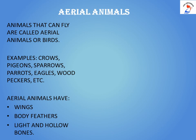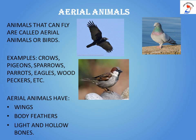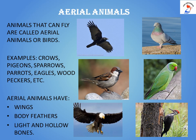The second type of animals we are going to learn about is aerial animals. Animals that can fly are called aerial animals, or in short, birds. Examples are crow, pigeons, sparrow, parrots, eagles, woodpeckers, and so on. These aerial animals have special structures like wings to fly. They have body feathers, and their body is light and hollow.